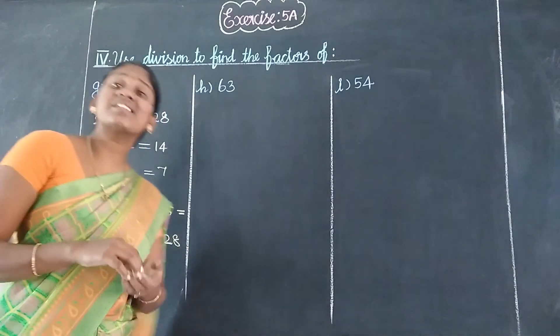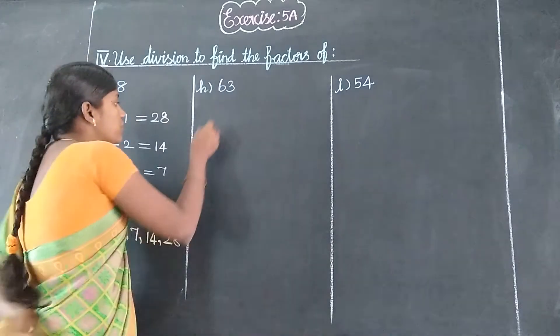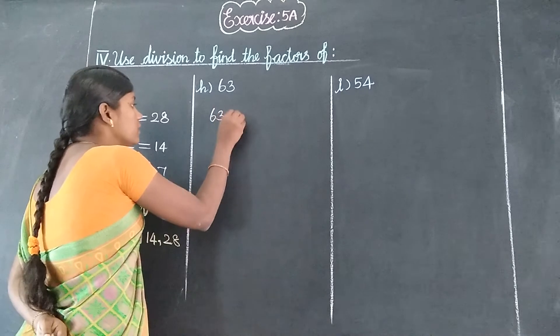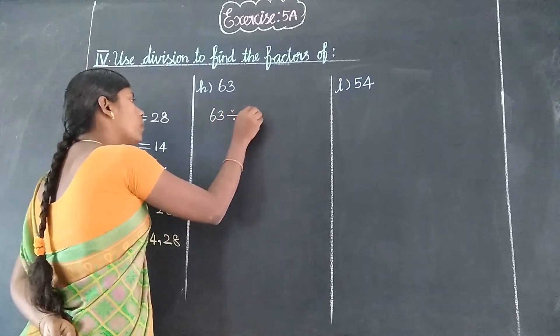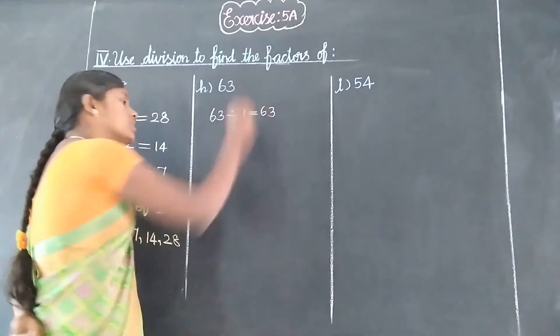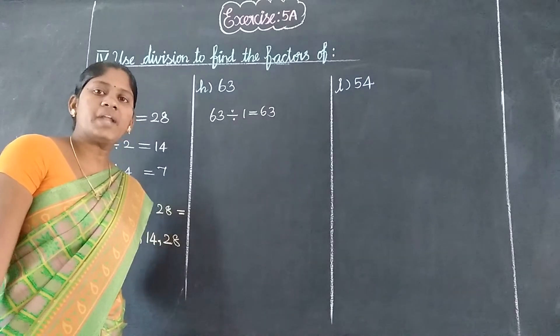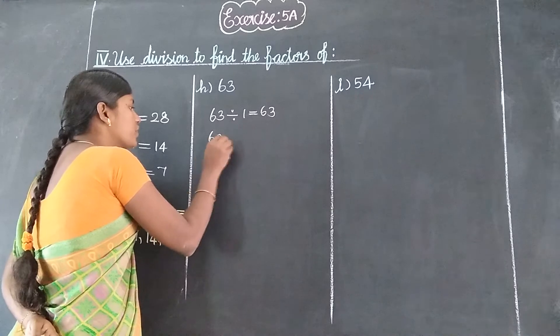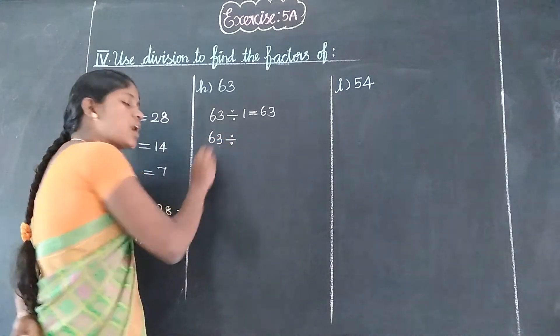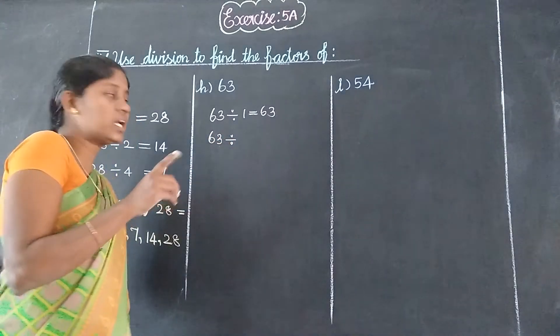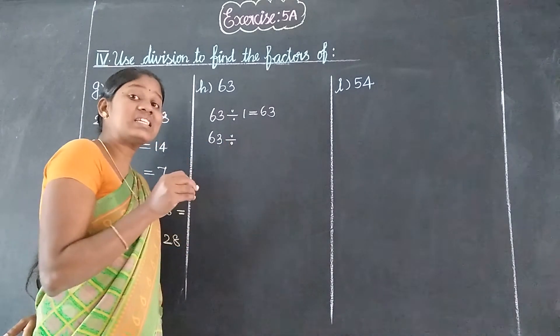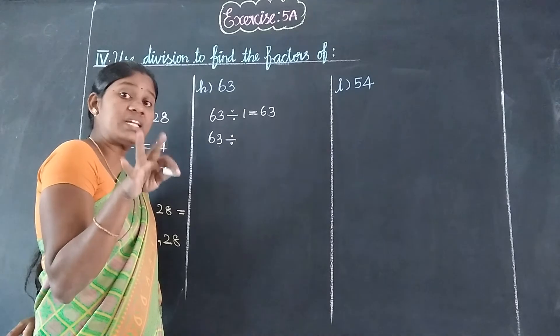Finished. Next is 63. First, one table. 63 divided by 1 equals 63. Next, does 2 times 63 work? No, because the last digit is 3.